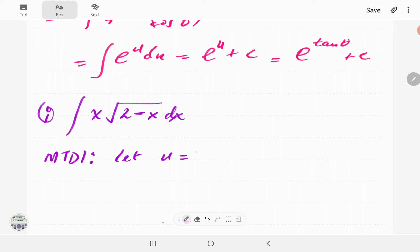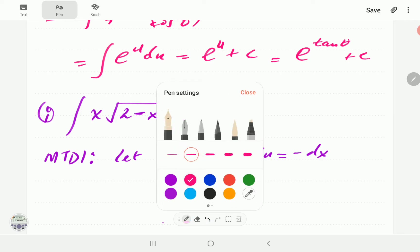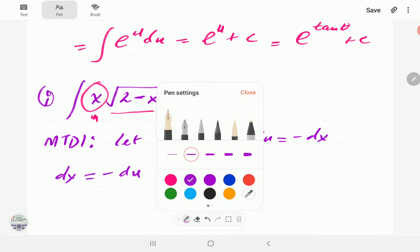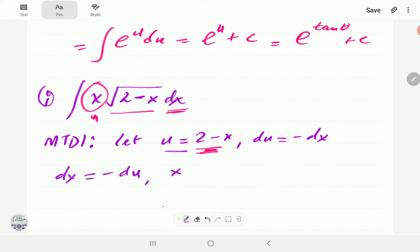In method 1, we let u equal 2-x. Then du is -dx, so dx is -du. So that means we have managed to write this one in terms of u. This one is already taken care of here. So all that remains is this one. But we can make x the subject of the formula here and hence write this one in terms of u. So from this equation, x is 2-u.